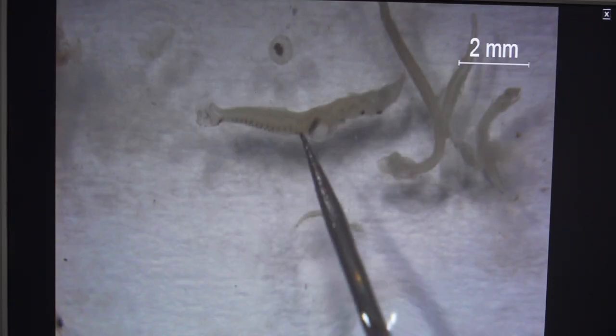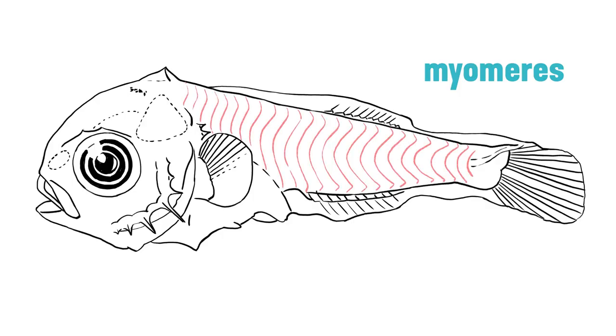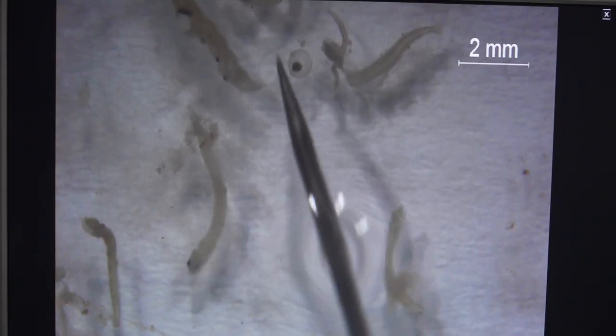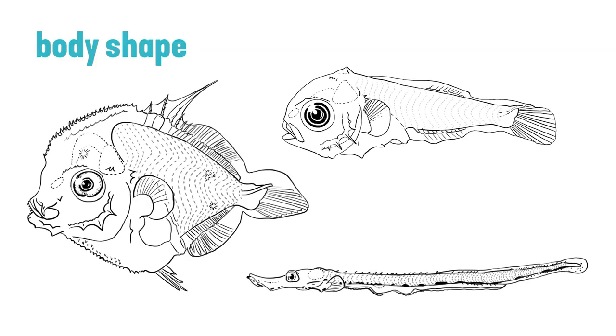Everyone kind of has their own method. For me, I always start with counting the myomeres — that's the very first thing I do. I look at body shape and the myomeres, then use your eyes and try to put everything together. The Germans have a word for it: gestalt. I subdivide specimens into different body shapes first. If you can get piles of larvae that share similar body shapes, it's a lot easier to focus your attention, versus just looking at the whole dish individually.